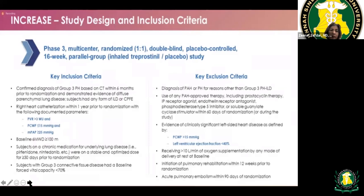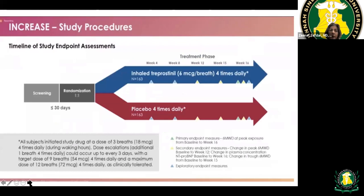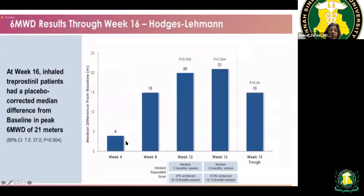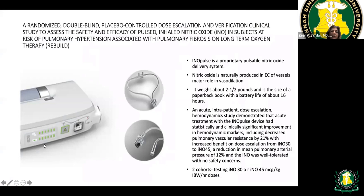One study randomized group three PH patients to inhaled treprostinil versus placebo. These patients had lung disease on CT scan but met PH diagnostic criteria. Walk distance improved by approximately 15–16 meters compared to baseline, showing modest benefit. Another device generates inhaled nitric oxide from ambient air and is being studied in pulmonary fibrosis patients on long-term oxygen at various nitric oxide doses.